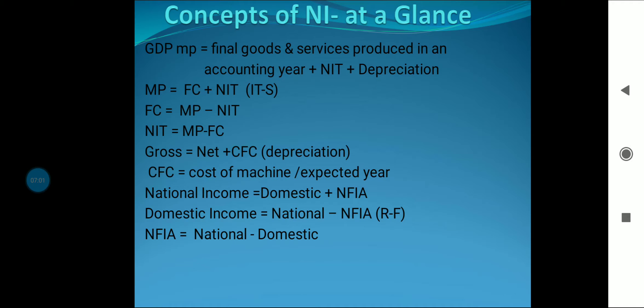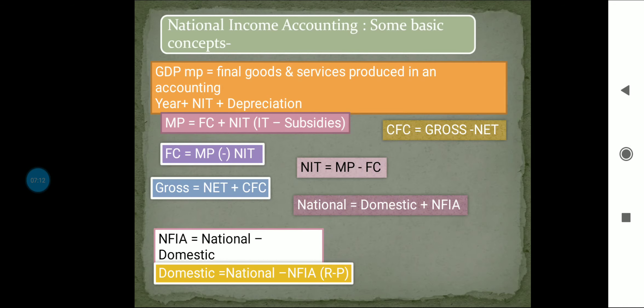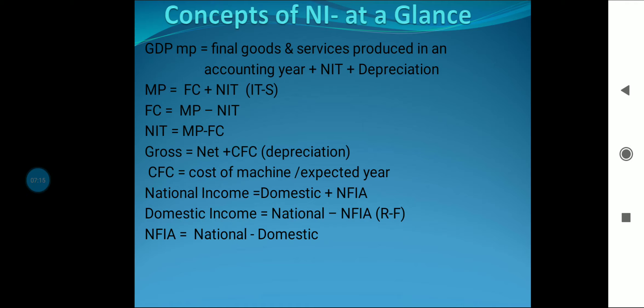Concepts of national income at a glance: GDP MP equals final goods and services produced in an accounting year plus NIT plus depreciation. To calculate market price, add NIT to factor cost. To calculate factor cost, deduct NIT from market price. NIT is calculated by deducting factor cost from market price. Gross means net plus consumption of fixed capital, and consumption of fixed capital equals the cost of the machine divided by its expected life in years.